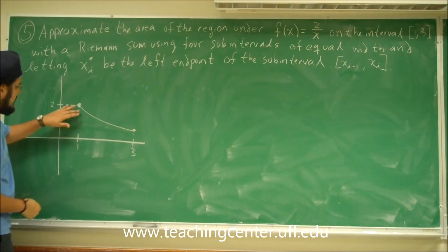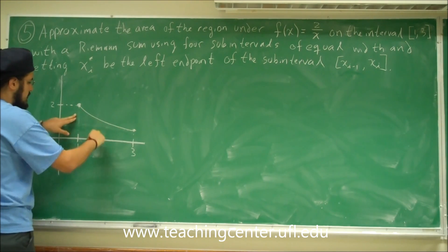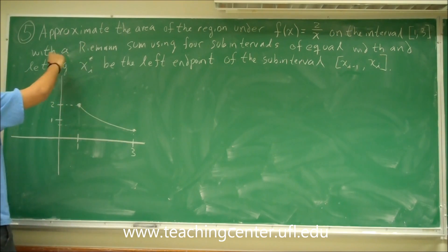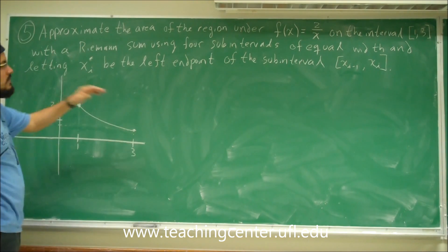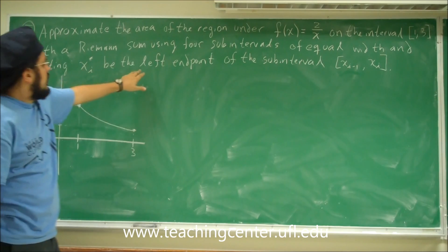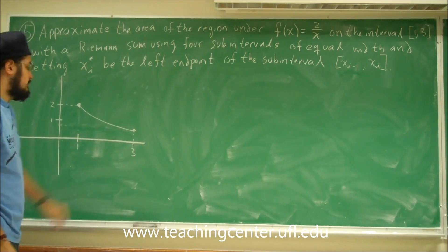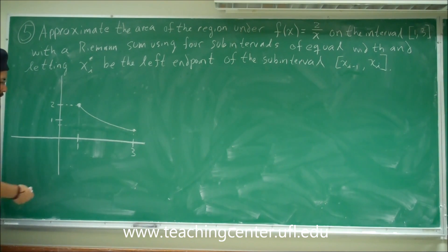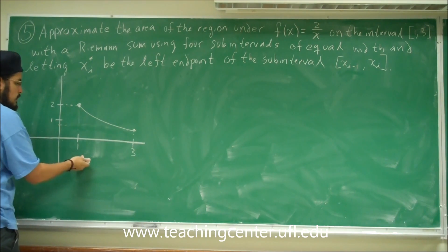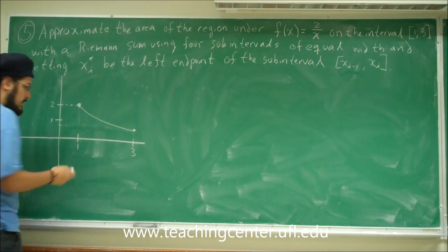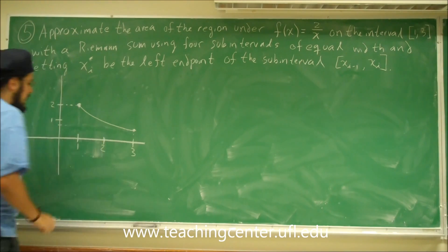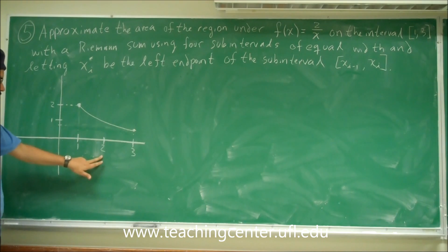What we want to find is the area under the curve. We want to approximate it using left endpoints with 4 subintervals. So I'm going to find the midpoint between 3 and 1, which is 2, roughly about here.